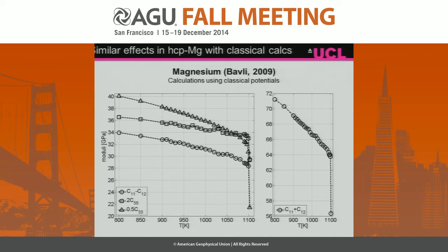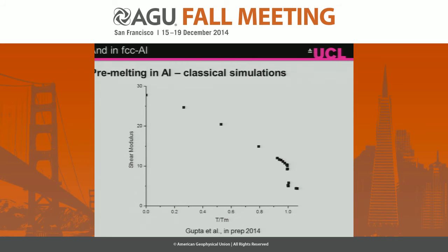These pre-melting effects have been observed before in simulations. Results on magnesium using classical potentials show a very similar drop-off in elastic moduli just before melting. An intern over the summer also looked at aluminium and saw, again with classical potentials, a significant reduction in shear modulus with temperature.